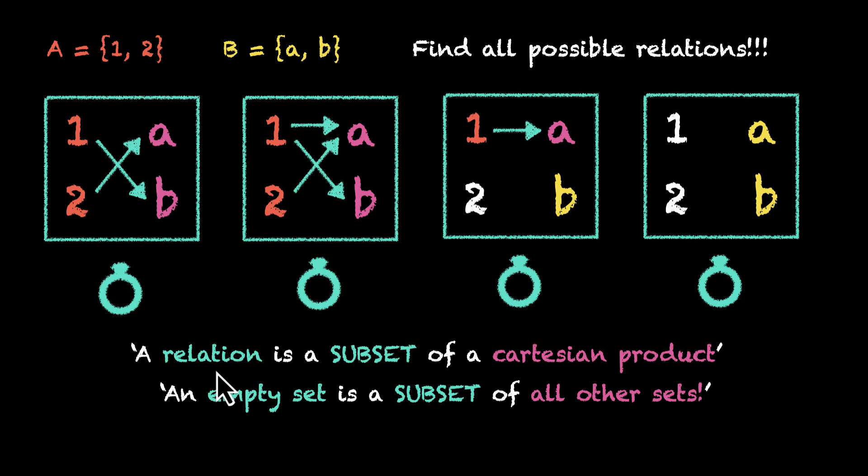So what do we know so far? We know that a relation is a subset of a Cartesian product. If we want to find all possible relations, we need to find all possible subsets. And subsets of what? Subsets of a Cartesian product.